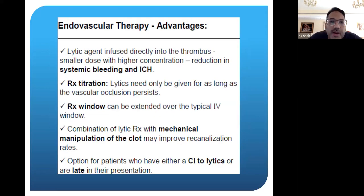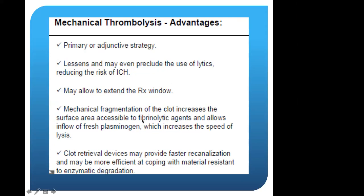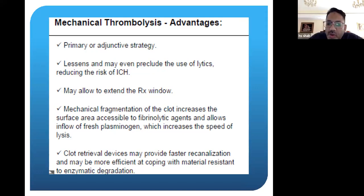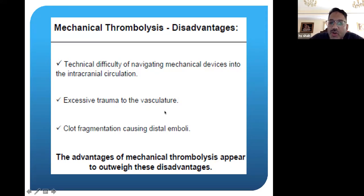With endovascular therapies, you try to get agents directly intra-arterially. The typical treatment window can be extended, but the problem was high mortality rates and high complication rates. Mechanical thrombolysis was then tried — using mechanical means to fragment the clot, break it up, and then allow access to intravenous or intra-arterial agents. We started doing this as a combination therapy. A problem with clot fragmentation is that you can cause distal embolization — while you may break up the clot, some pieces may break off and go more distal, making them harder to treat. You can also cause trauma to the vasculature.